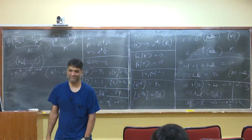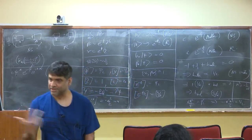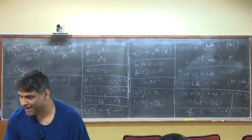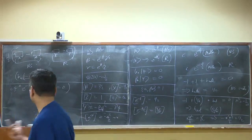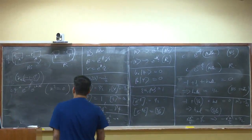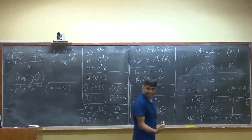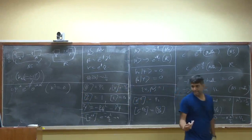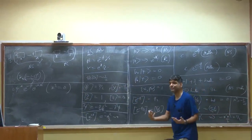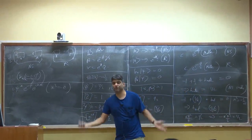The tachyon does not survive. It's not one of the states in the theory. This projection with minus one to the power F is called the GSO projection and is a key ingredient to making superstring theory tachyon free.